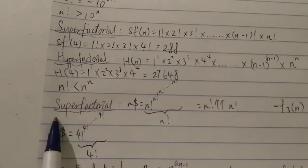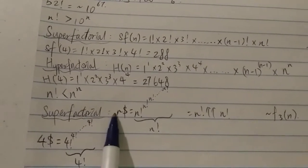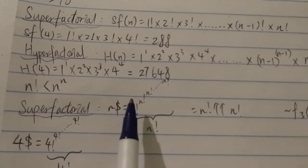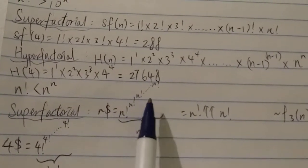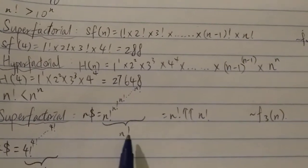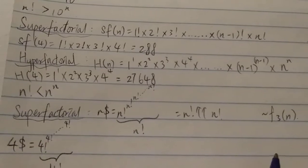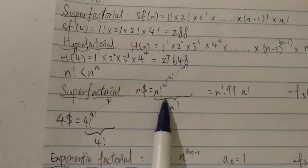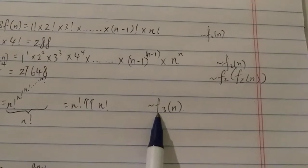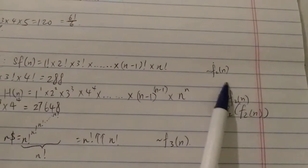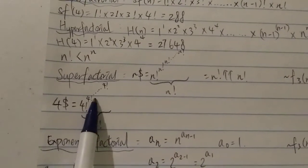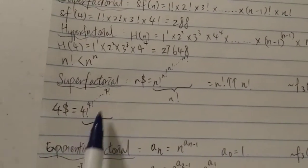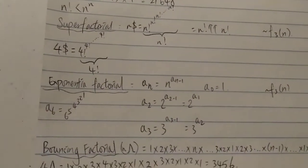The next one is the second type of super factorial, which equals n! raised to the power of n! raised to the power of n!, with n! number of levels. This is equivalent to n! double-arrow n!. Clearly this one grows faster than all the previous ones, and its growth rate in the fast-growing hierarchy is around f₃(n). For n = 4, it equals 4! to the 4! to the 4!, with 4! levels — pretty big and fast-growing.